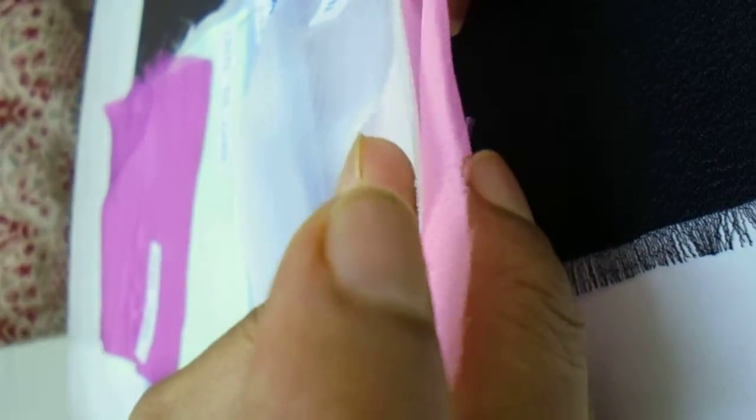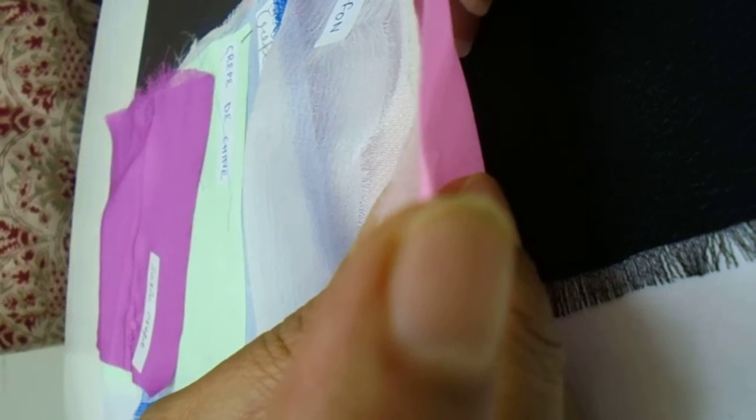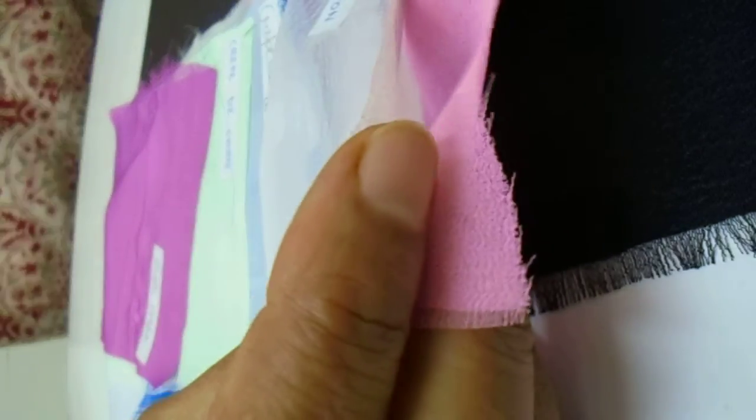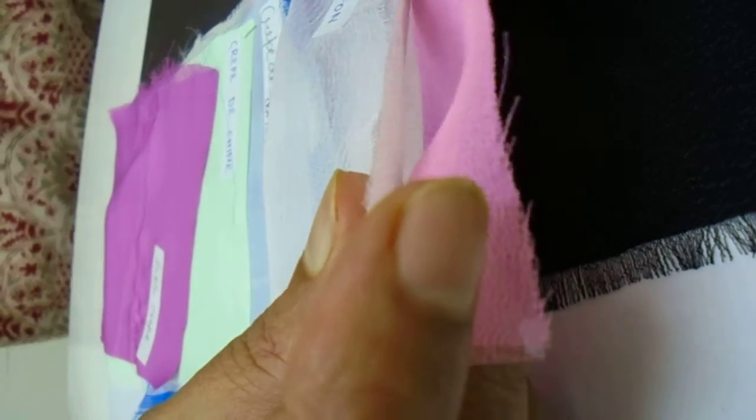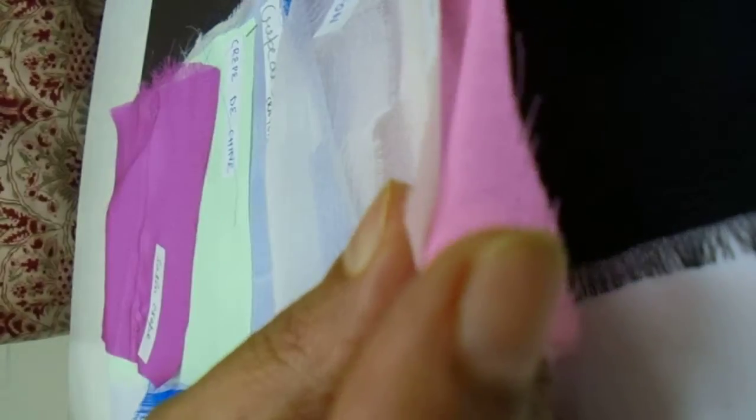Polyester georgette fabrics generally come by weight. Even rayon georgette fabrics come by weight. Silk georgette fabrics also come by weight. They are sold in the market as kilograms per hundred meters.